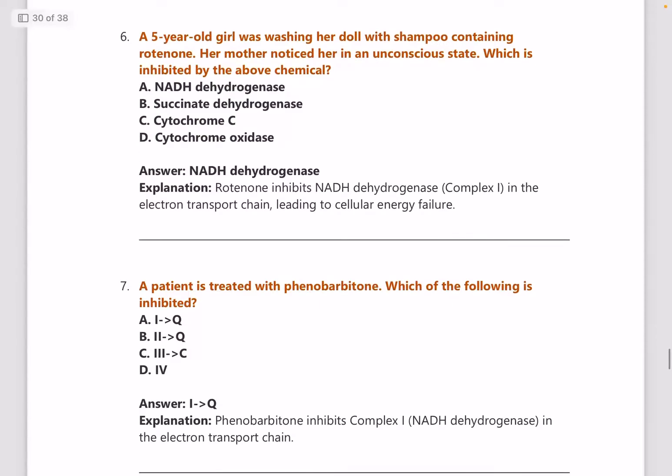Next: a five-year-old girl was washing her doll with shampoo containing rotenone, and her mother found her in an unconscious state — what is inhibited? Answer is NADH dehydrogenase. For most enzyme topics in biochemistry, you need to go through the PYTs for better explanation, as these can come up as potential questions.